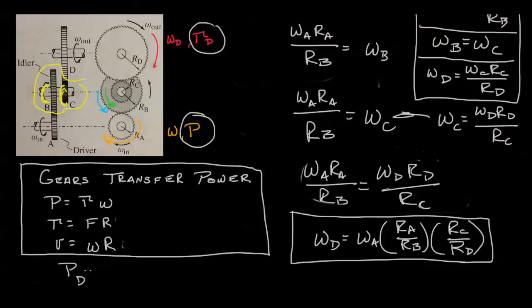So the power at D equals the torque at D times the angular acceleration at D. And the power at D coincidentally equals the power at A. So we just need to solve for torque. And we have an easy solution.